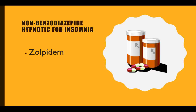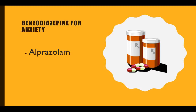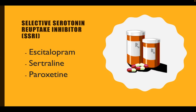What is the non-benzodiazepine hypnotic for insomnia? It is zolpidem. What is the benzodiazepine for anxiety? Letter A for anxiety, letter A — alprazolam. What is the SSRI or selective serotonin reuptake inhibitor we can use first-line for depression? We can use escitalopram, sertraline, or paroxetine.